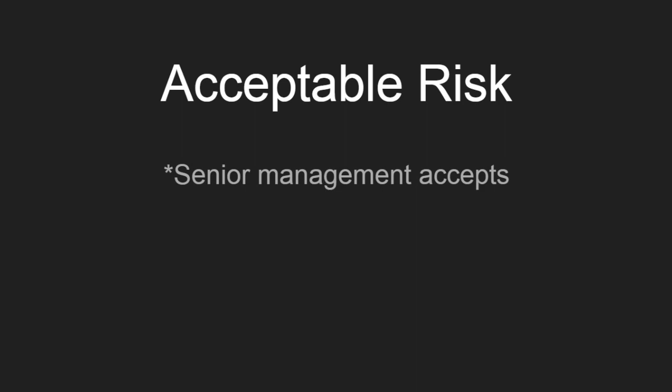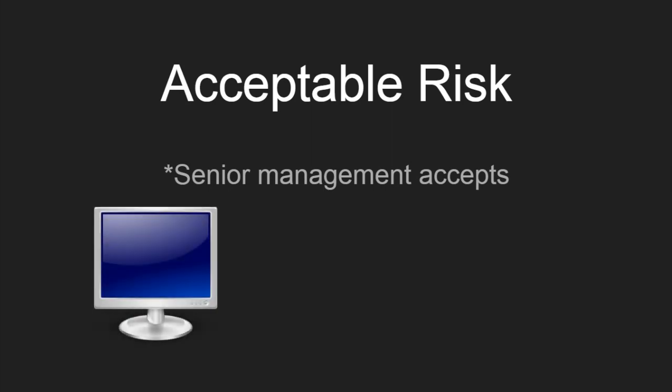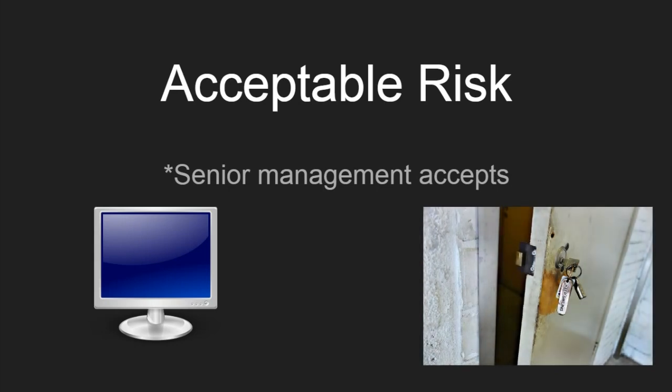Acceptable risk is the amount of risk that senior management is willing to accept. For example, every business has the risk of a break-in happening. If your business manufactures valuable goods like TVs or electronics, and if it's located in a high crime area, there's a high risk of break-ins. If management decides not to put any locks on the doors and not hire any security guards, they're basically willing to accept the risk of a break-in.